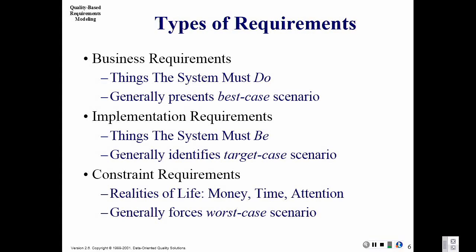There are lots of different models for what requirements are. I describe requirements for an MIS in terms of three types. First, business requirements — things the system must do: it must take orders, price orders, assign them to a warehouse. Canvas has to display modules, allow you to sign on. These are the things the system has to do, and for many organizations gathering requirements means only this. It's where we spend most of our time, and it's the justification for most projects — the increased use of functionality to support the business model.